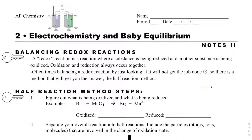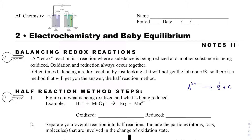If I have a reaction where A goes to B plus C, and A is 2 plus, then B might be 2 plus and C could be 0 — that would work. Or B could be plus 1 and C could be plus 1, so the product side is plus 2. But B and C both being neutral would not be balanced. So for redox reactions, where something is being oxidized and something is being reduced, this method will allow us to make sure charges get balanced.